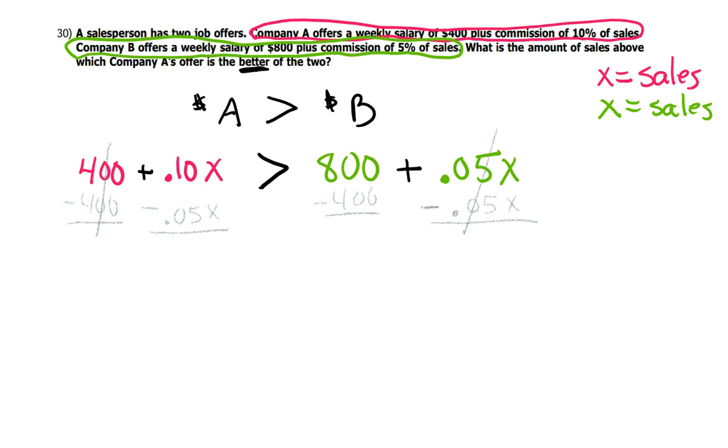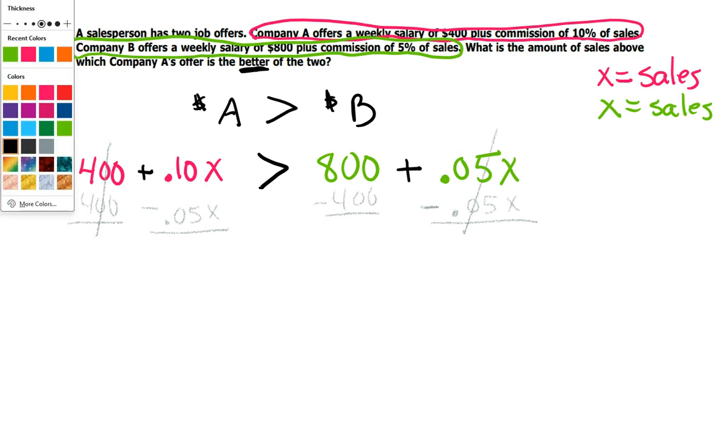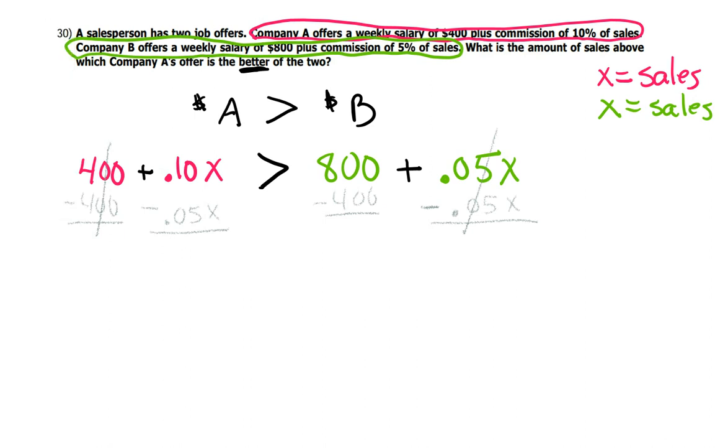So on the left, .10 X minus .05 X would be .05 X greater than 800 minus 400 is 400. And now your last step is to get rid of the .05. Since .05 is multiplied onto X, I will turn around and divide it by .05. And what you do to one side, you got to do the other.